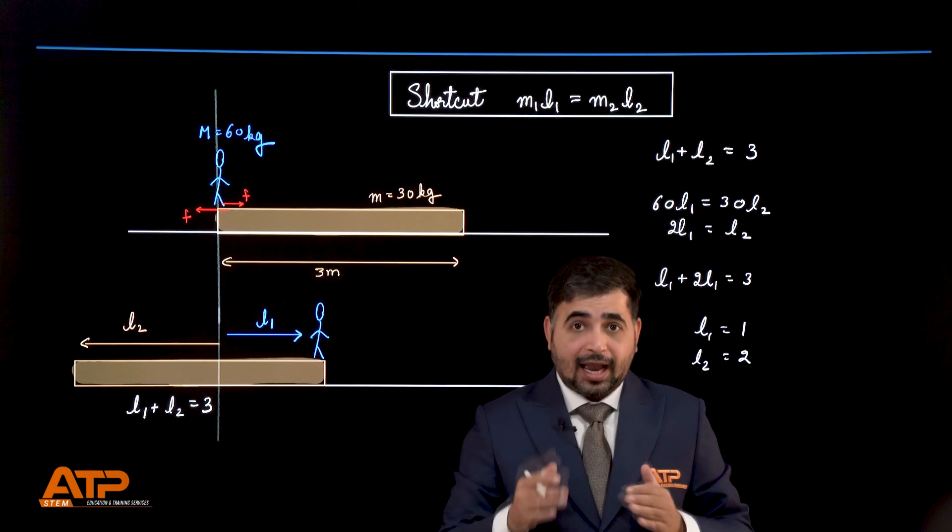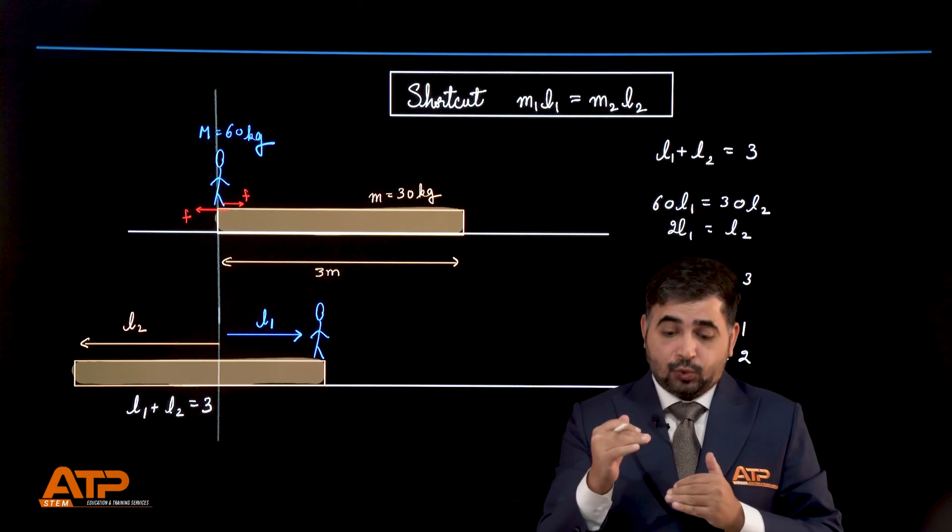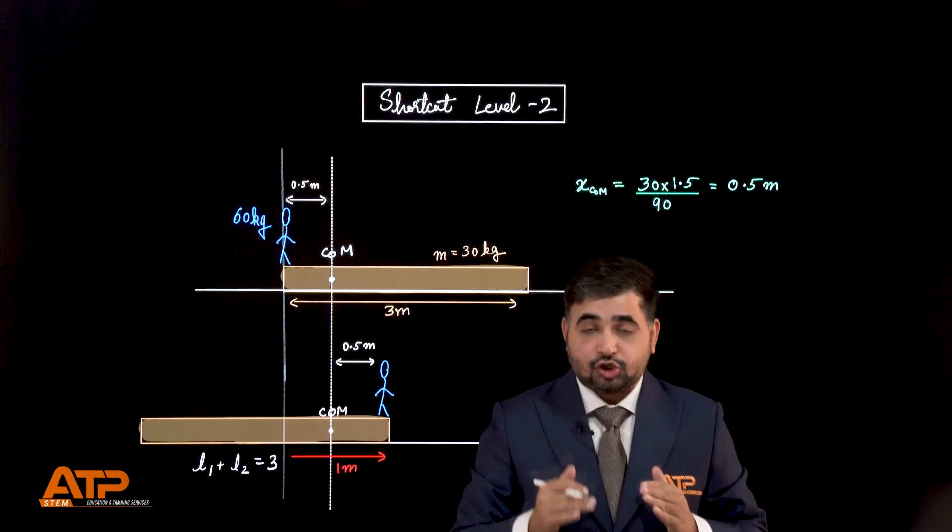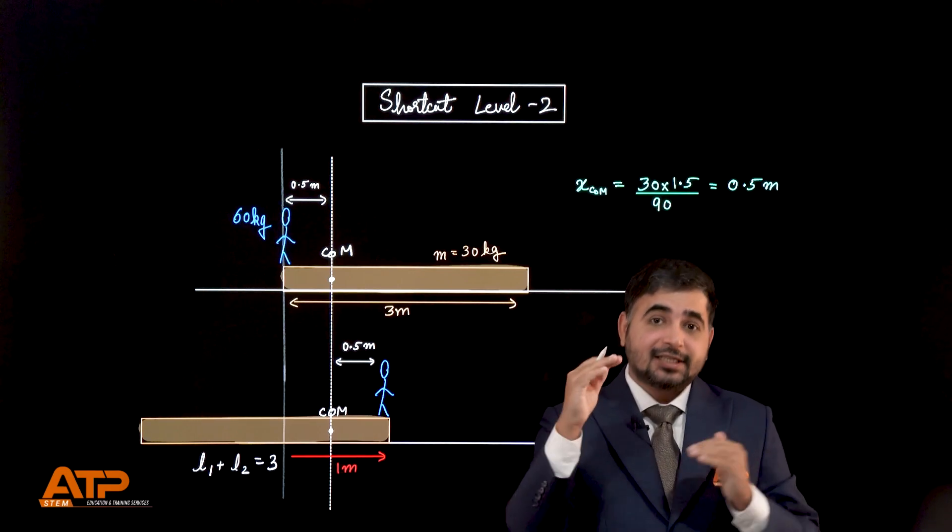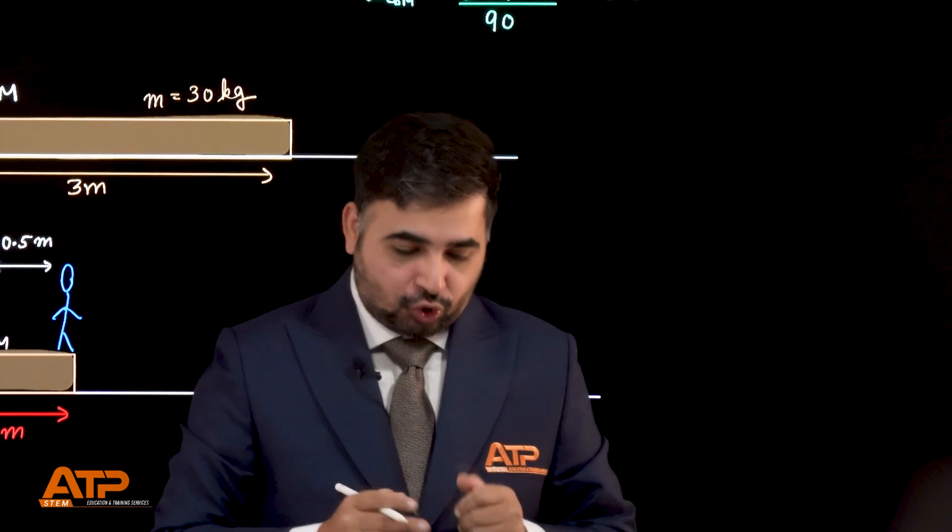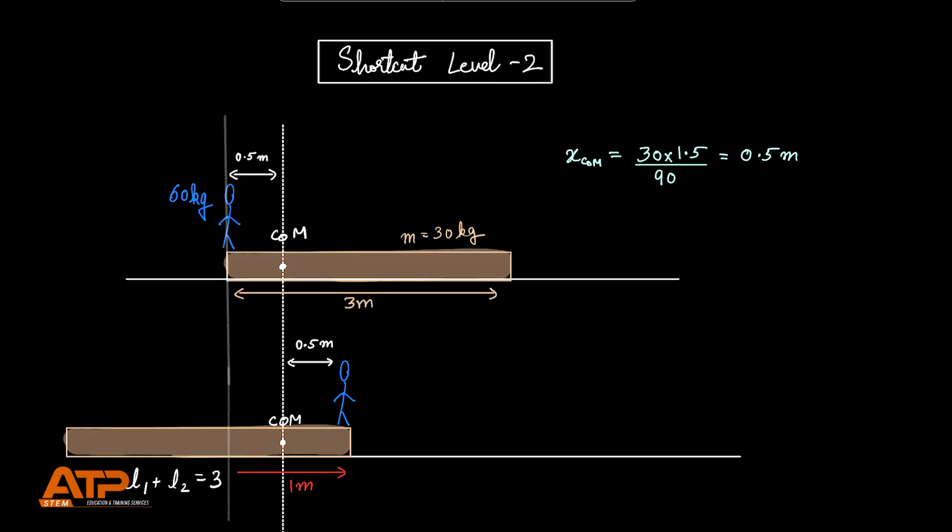But now, I'm going to give you a shortcut which is even faster than this. Now, let us discuss shortcut level 2, which is the fastest method to solve such kind of problem. So, here, you can see that center of mass is 0.5 meter assuming this point to be the origin.